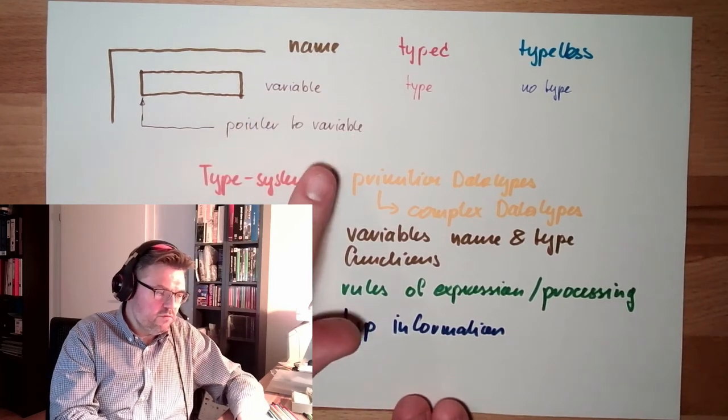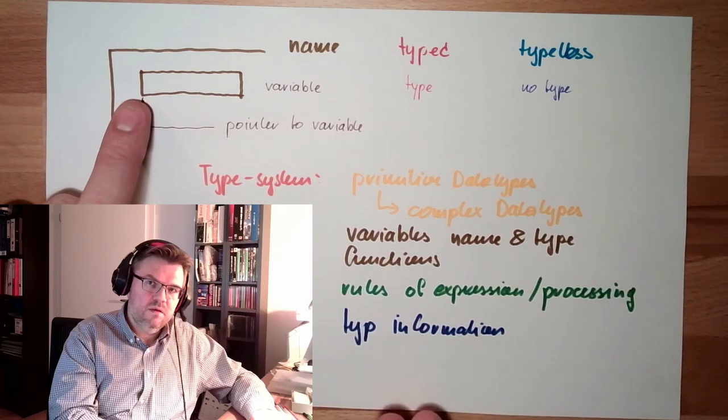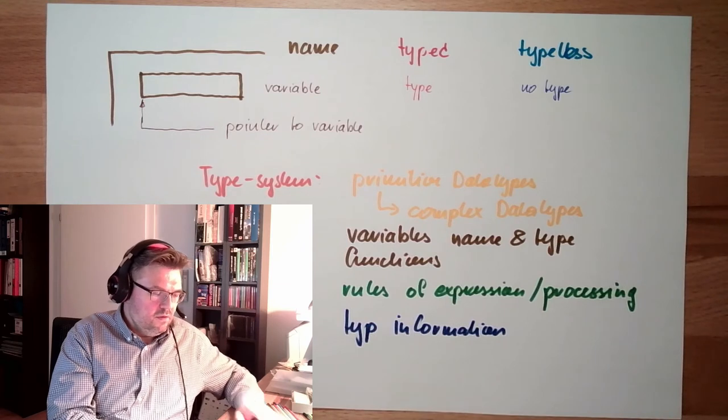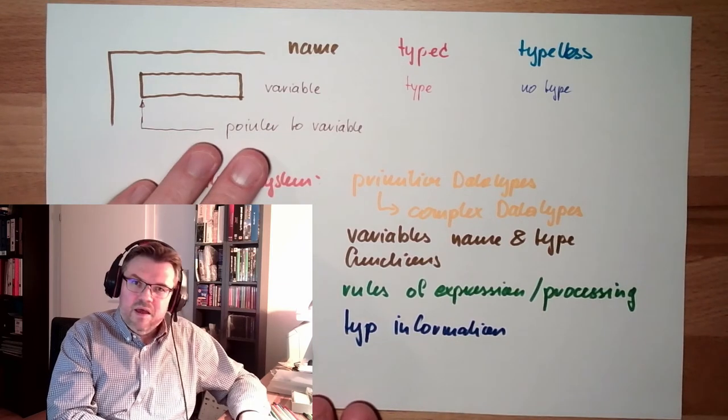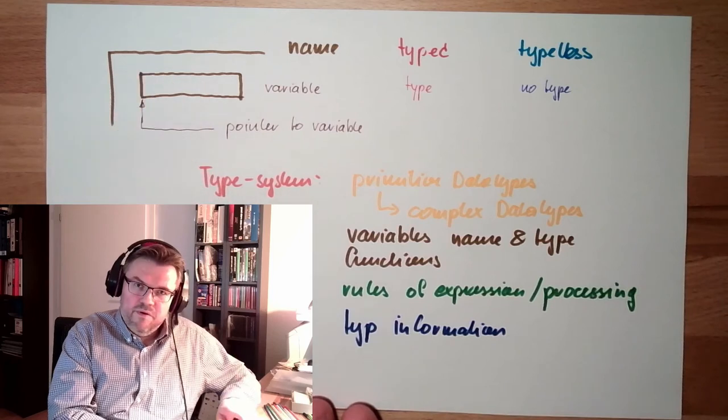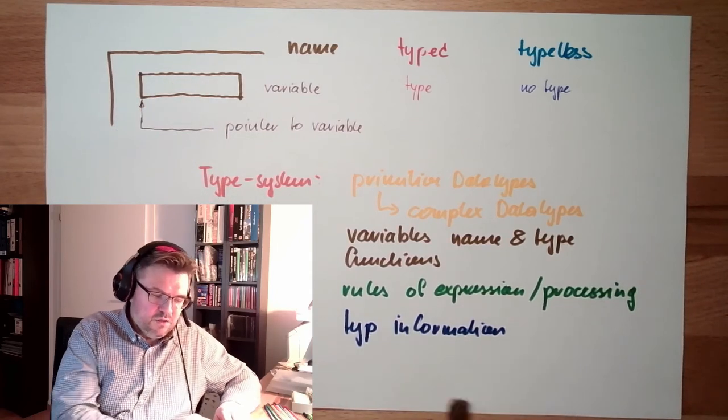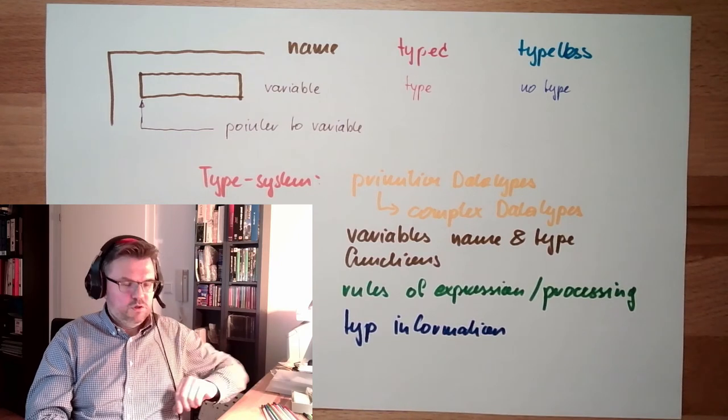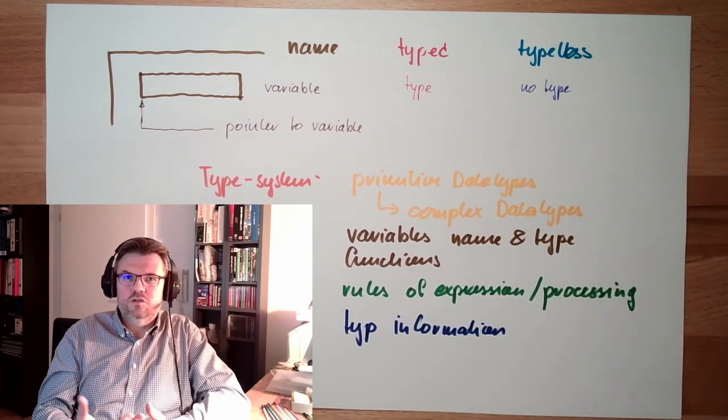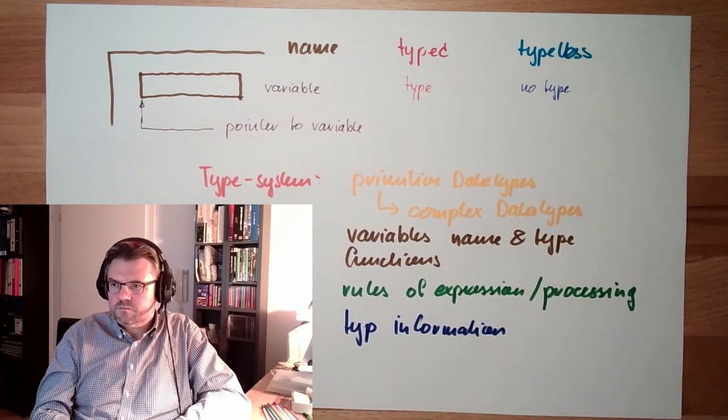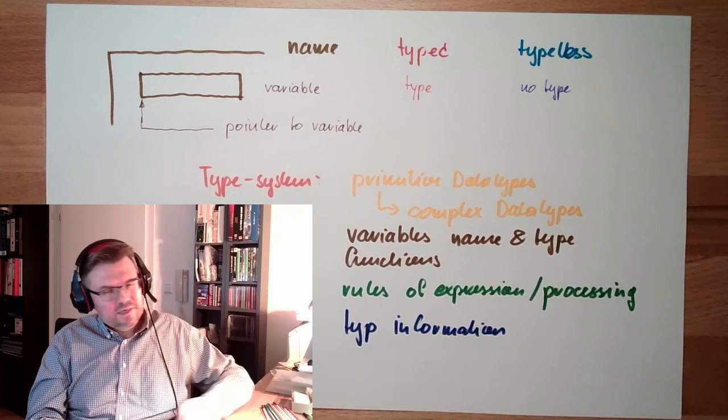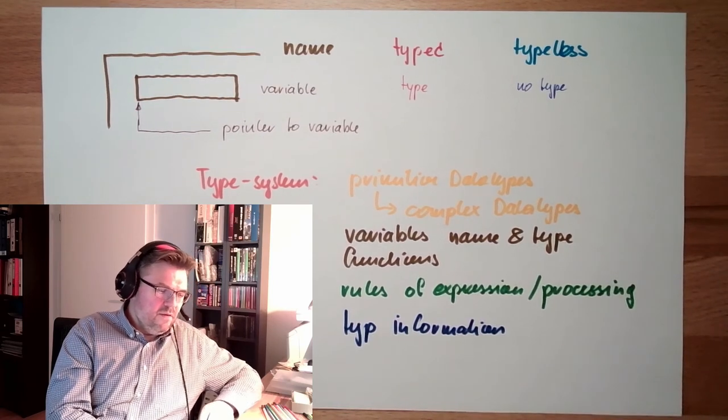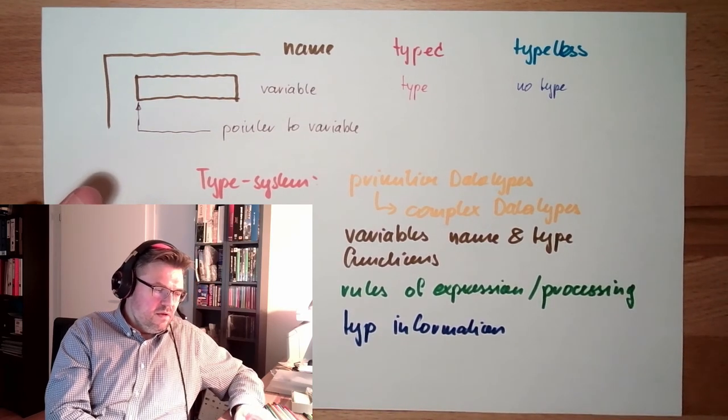The pointer usually points at the first byte where this variable is using the memory. Sometimes if we have a pointer which can point to different types of variables, this type information might be necessary, especially if there are objects with instance of checks. So this is a type system. If the type system can be checked during compile time, then this is static typing.